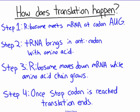So let's talk about the steps of translation now that we understand what a codon is. Step one: the ribosome meets mRNA at the codon AUG — that's the start codon, that's where we begin. Step two: tRNA brings in the anticodon with the amino acid. Step three: the ribosome moves down the mRNA while the amino acid chain grows. The amino acid chain gets longer and longer, and that's how we make a protein. We do this until we hit the stop codon — UGA — and once we hit that, translation ends and we have our protein.